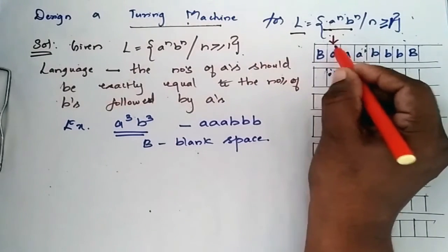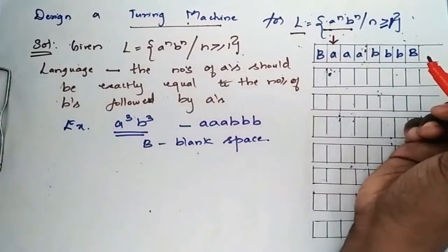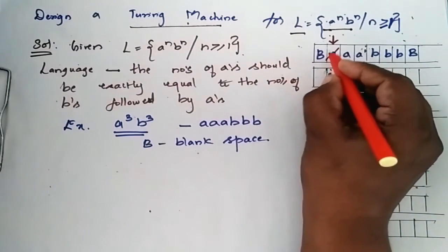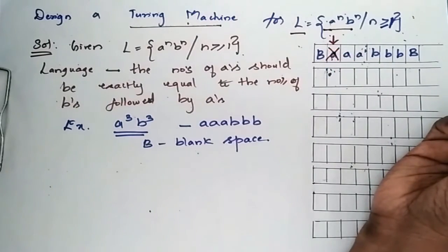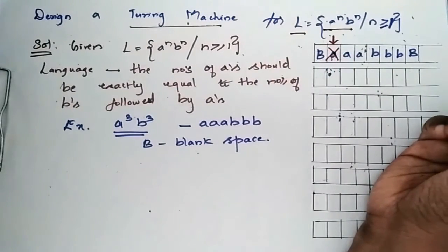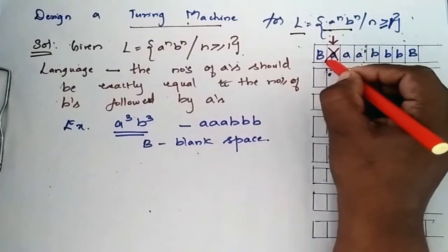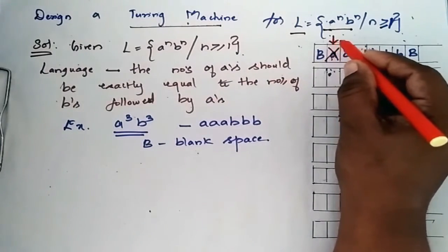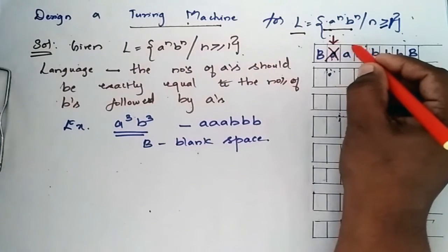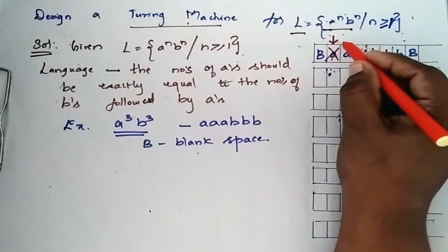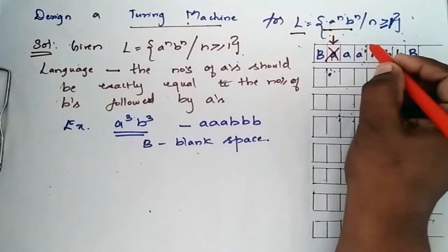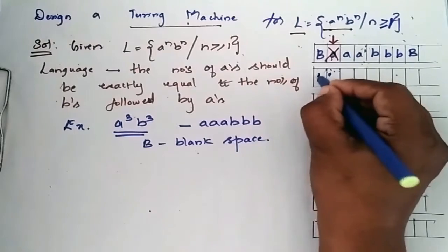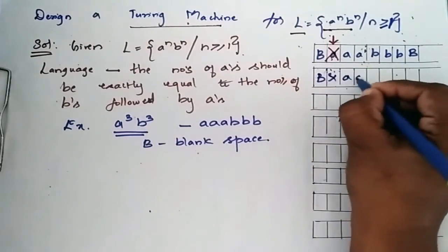First, the tape head encounters 'a'. When it encounters 'a', this 'a' is replaced by 'x'. After replacing, the tape header moves right. When the tape header moves right, it encounters more a's and keeps moving right until it reaches 'b'.